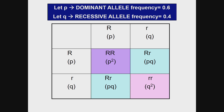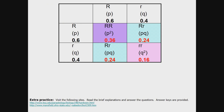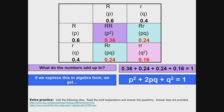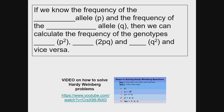Now let's add numbers. If p = 0.6 and q = 0.4, then p² = 0.36, pq = 0.24, another pq = 0.24, and q² = 0.16. When we add these together — 0.36 + 0.24 + 0.24 + 0.16 — they add to 1, confirming that p² + 2pq + q² = 1. So if we know the frequency of the dominant allele and the frequency of the recessive allele, we can calculate the frequency of all three genotypes: p², 2pq, and q².